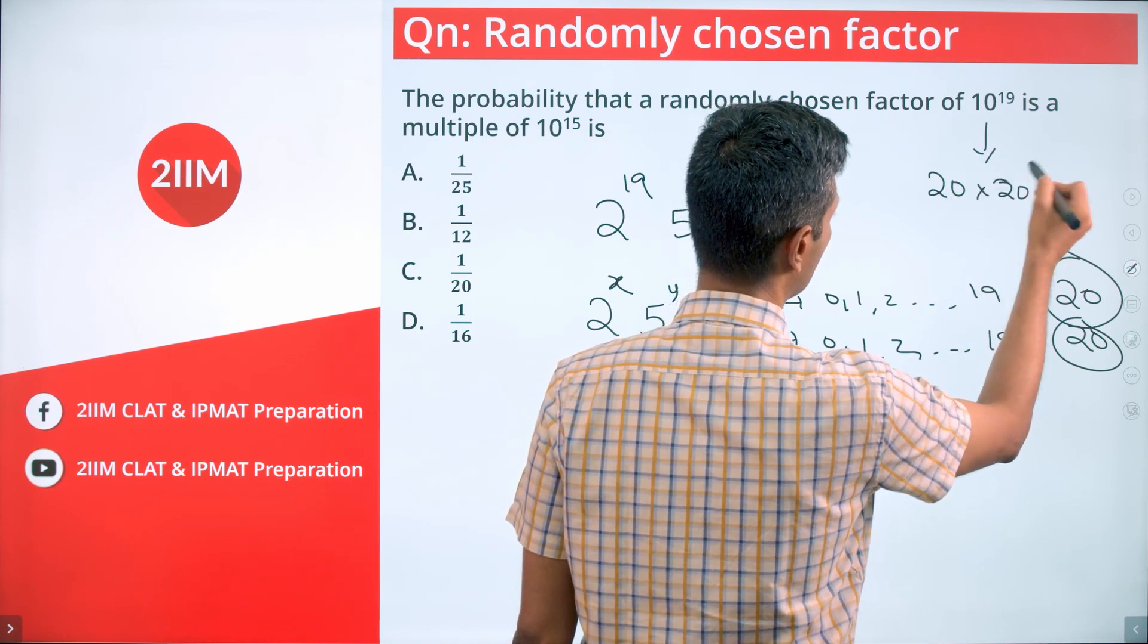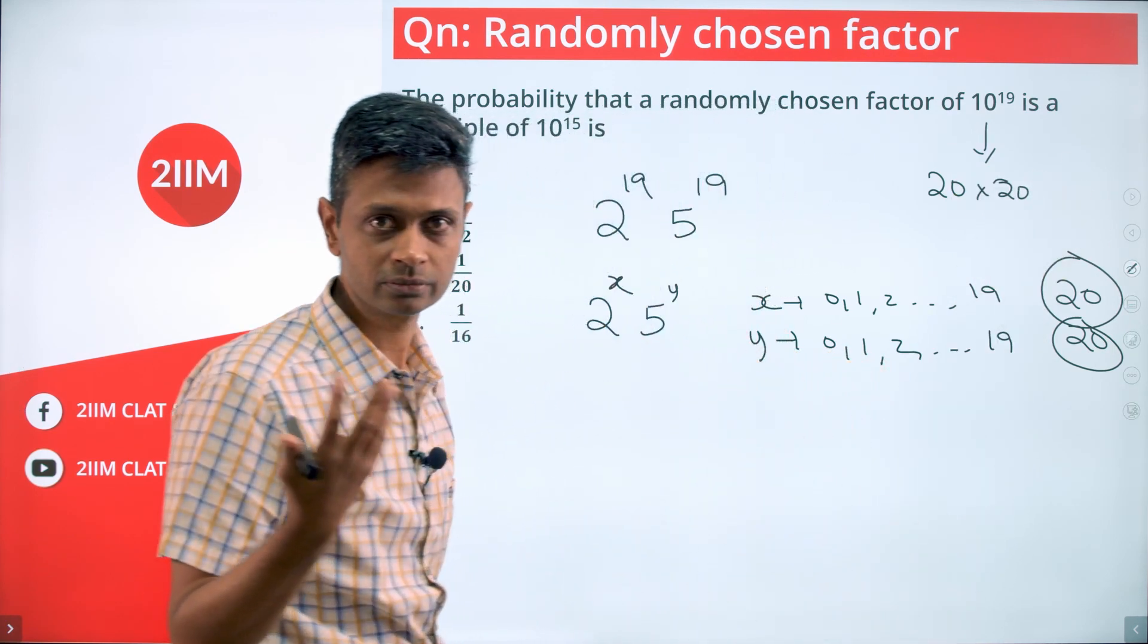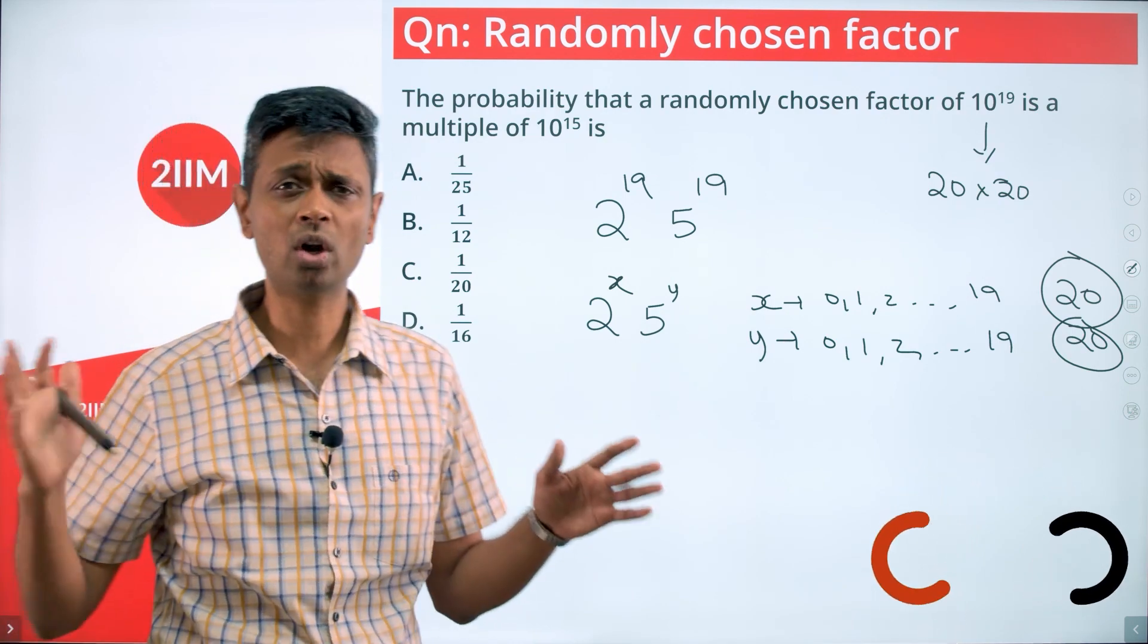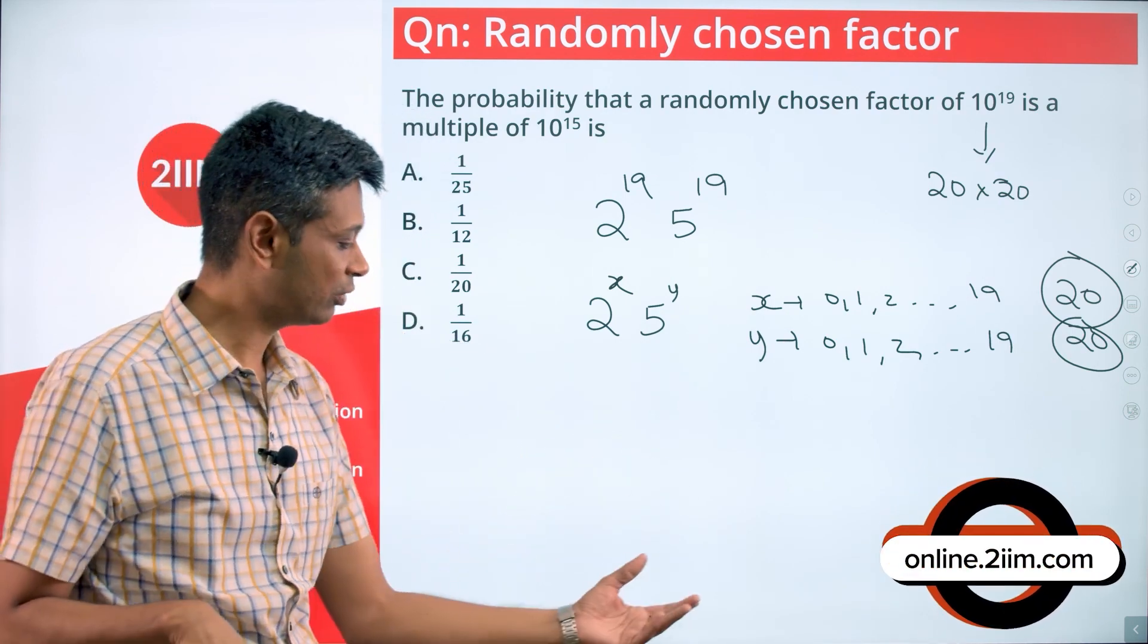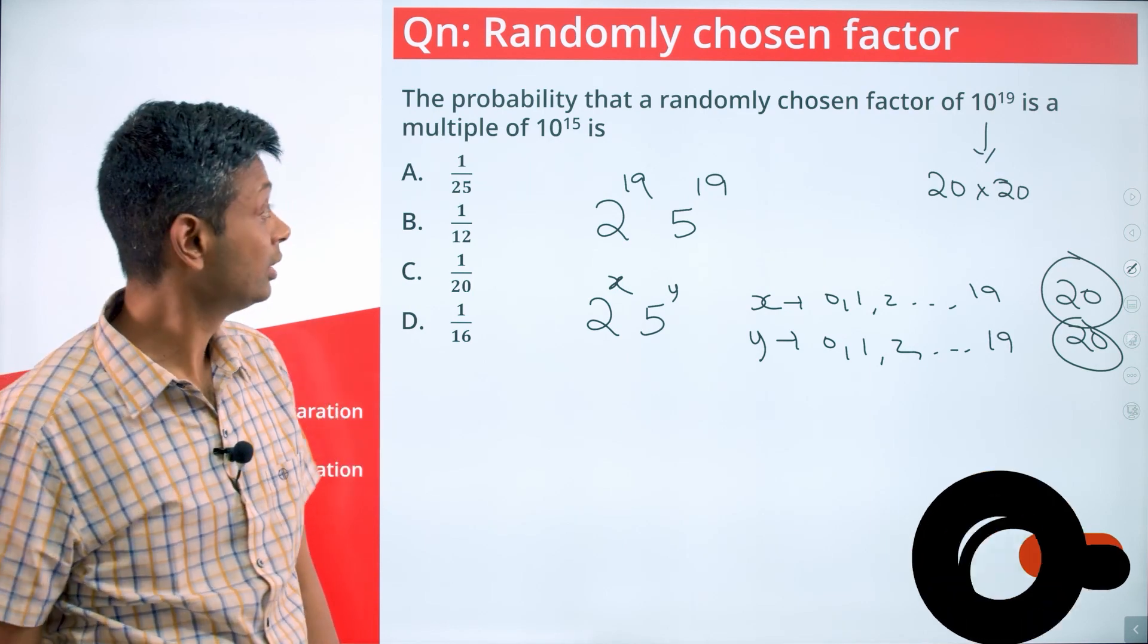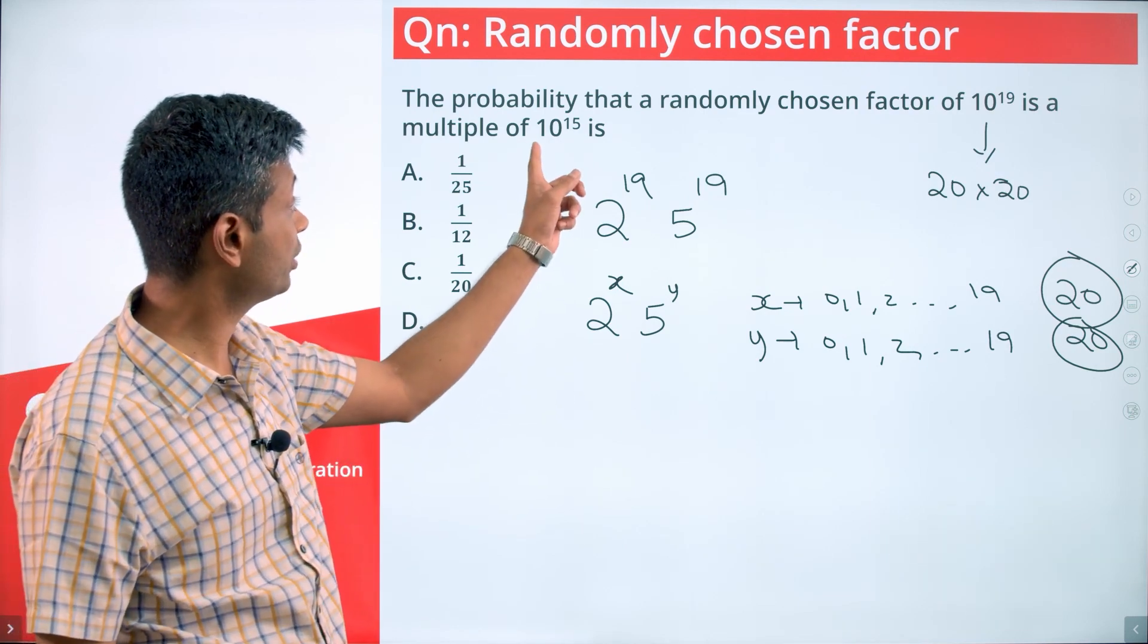400 factors. Lovely, that's the sum total of all factors. From that, we are selecting one. What is the probability that it will happen to be a multiple of 10^15?